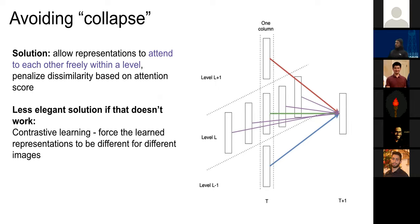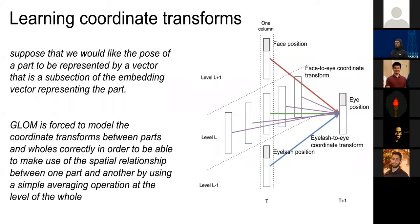By only penalizing differences based on attention scores, and by having these islands of identical vectors, you can incur almost no error under that penalization scheme — the hope is that collapse can be avoided without needing contrastive learning. If this doesn't work, the fallback is contrastive learning, forcing learned representations to be different for different images or different patches of the same image.